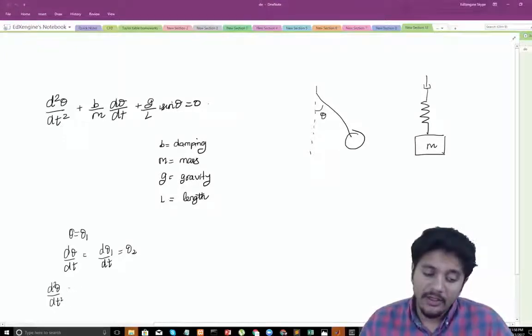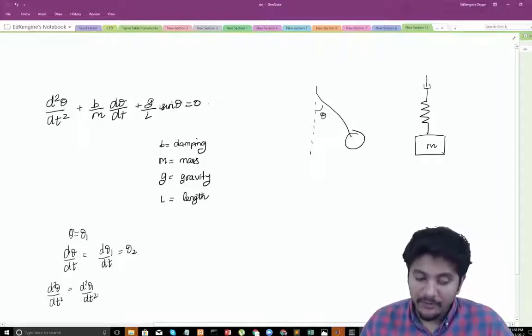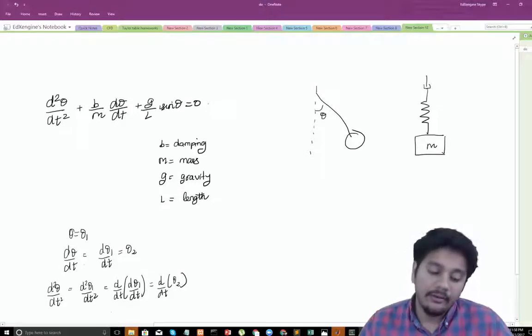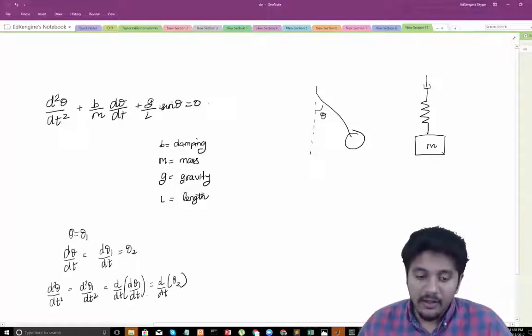So once I have that I'm going to say that d square theta by dt square, right? This is going to be equal to d square theta 1 by dt square because theta is equal to theta 1 and this is nothing but d by dt of d theta 1 by dt and this is nothing but d by dt of theta 2. So there is a reason why we are doing this transformation and it will make sense in a second.